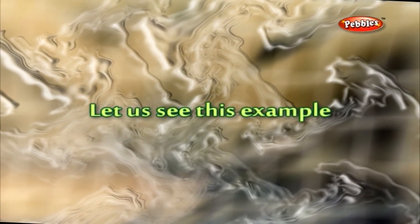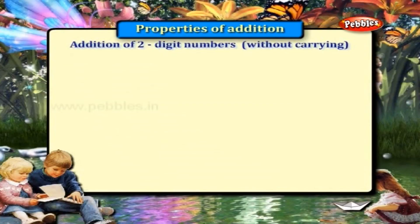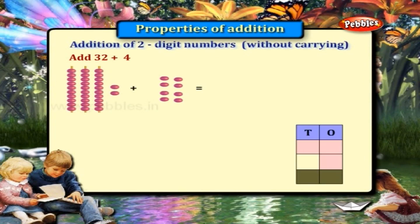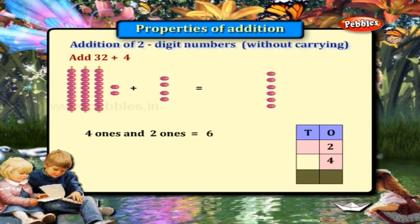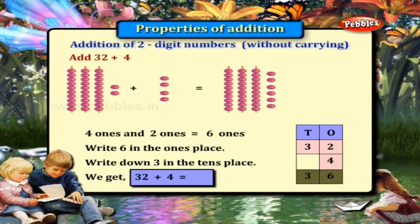Let us see this example. 32 plus 4. 4 ones and 2 ones is equal to 6 ones. So write 6 in the ones place. Write 3 in the tens place. We get 32 plus 4 is equal to 36.